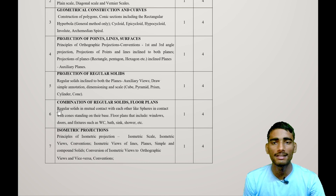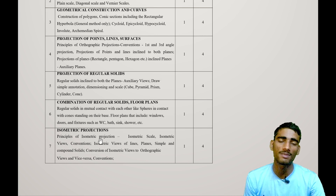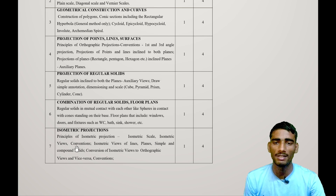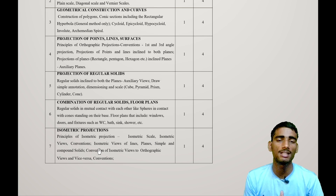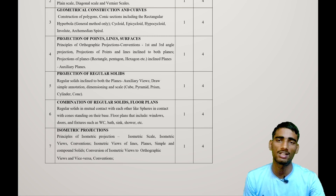Seventh is Isometric Projection, which is similar to regular projection but with an isometric approach. You need to study the principles of isometric projection, isometric scale, isometric views, conventions, and plain, simple, and compound solids.